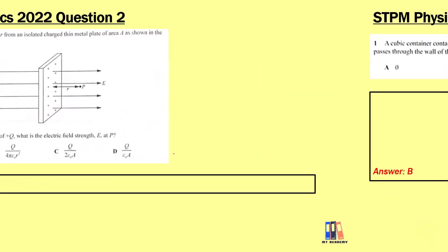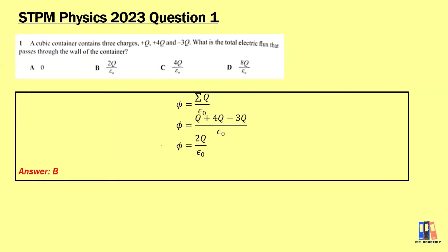Moving to the 2023 question: a cubic container holds three charges — positive Q, positive 4Q, and negative 3Q. What is the total electric flux through the walls? Applying Gauss's Law, flux equals total charge over permittivity. The total charge is Q + 4Q − 3Q = 2Q, so the answer is B: 2Q over ε₀.